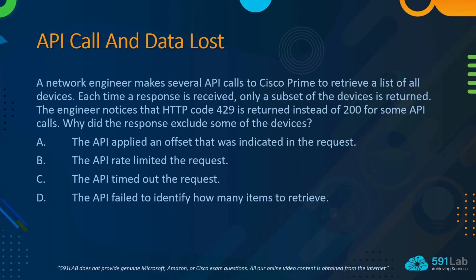Today's topic is API call and data loss. The question is: a network engineer makes several API calls to Cisco Prime to retrieve the list of all devices. Each time the response is received, only a subset of the devices is retained. The engineer noticed that HTTP code 429 is returned instead of 200 for some API calls. Why did the response exclude some of the devices?